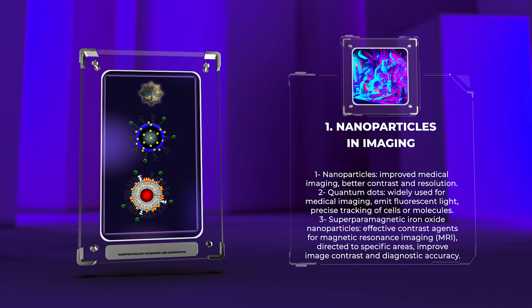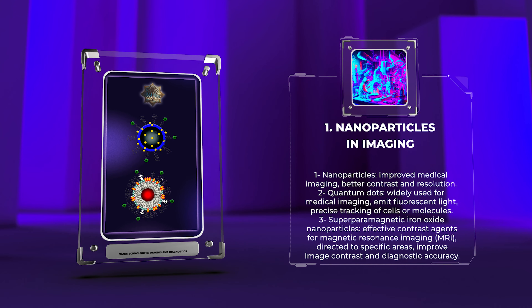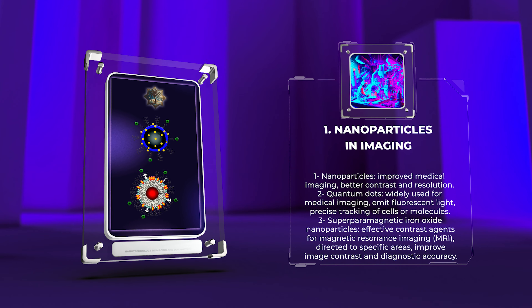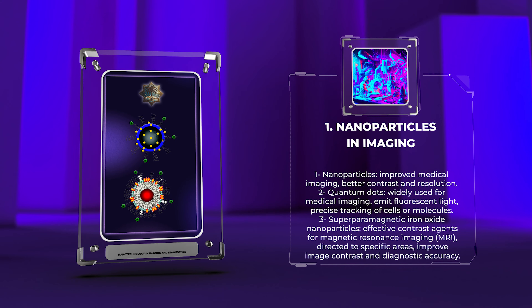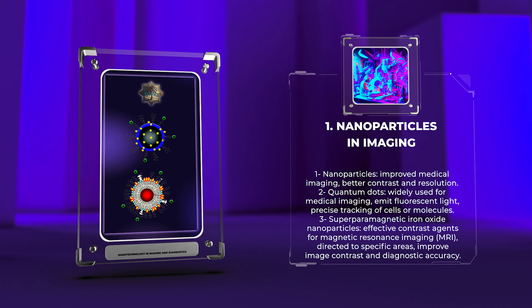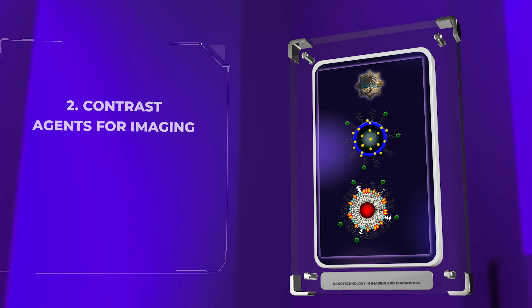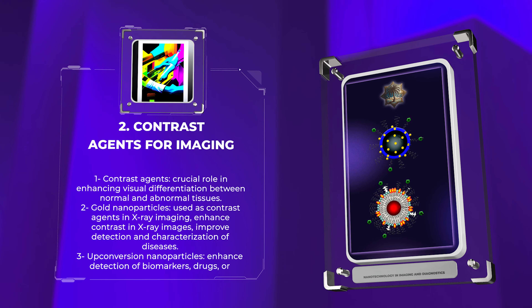Superparamagnetic iron oxide nanoparticles are effective contrast agents for magnetic resonance imaging, MRI. Their magnetic properties allow them to be directed to specific areas, enhancing visualization of anatomical structures or pathological lesions. These nanoparticles also alter the relaxation times of nearby water molecules, improving image contrast and diagnostic accuracy in MRI scans. Contrast agents play a crucial role in enhancing the visual differentiation between normal and abnormal tissues in medical imaging techniques.